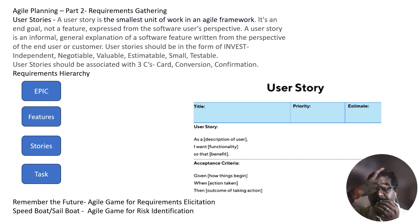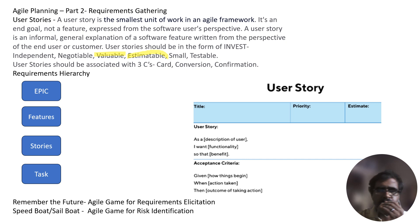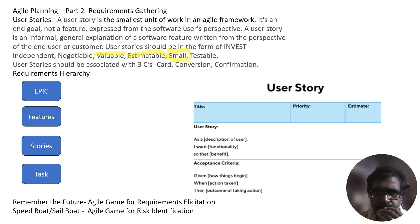Third, user stories should be Valuable — each user story should deliver business benefits. Fourth, user stories should be Estimatable — every story should be clear so that the team can put effort estimates against them. Fifth, user stories should be Small — user stories should represent a small unit of work to make it easier to track. Bigger stories take more time to deliver, and if work is incorrect it could lead to costly rework. A user story should be small enough to fit within one iteration, as work on a user story cannot be spread across iterations. Bigger user stories should be broken down into smaller ones.